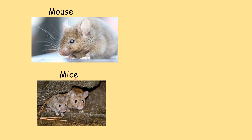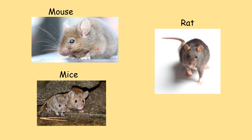Now I will tell you the difference between a mouse and a rat. A mouse has larger ears than a rat — a rat has smaller ears. A mouse has a longer tail compared to a rat, and even its feet are larger.